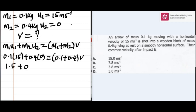0.1 plus 0.4 gives us 0.5v. We can rearrange the formula: 1.5 divided by 0.5. That will give us the common velocity of 3 meters per second.